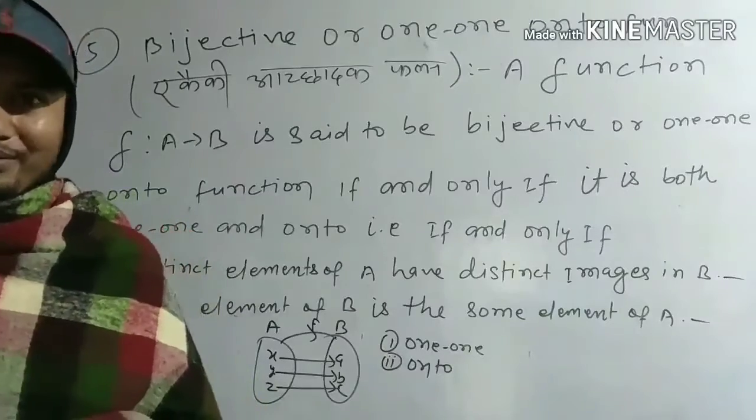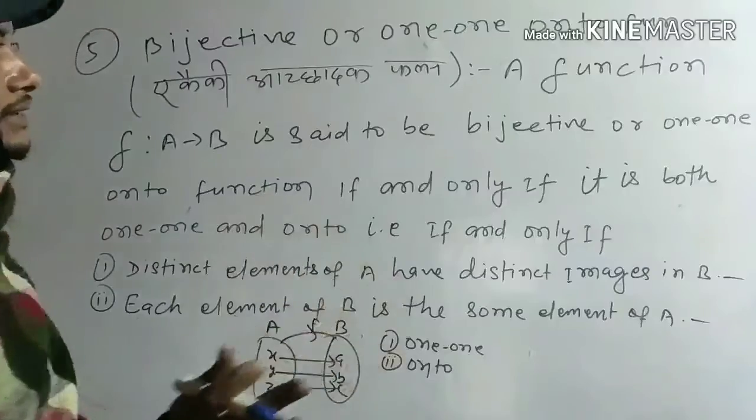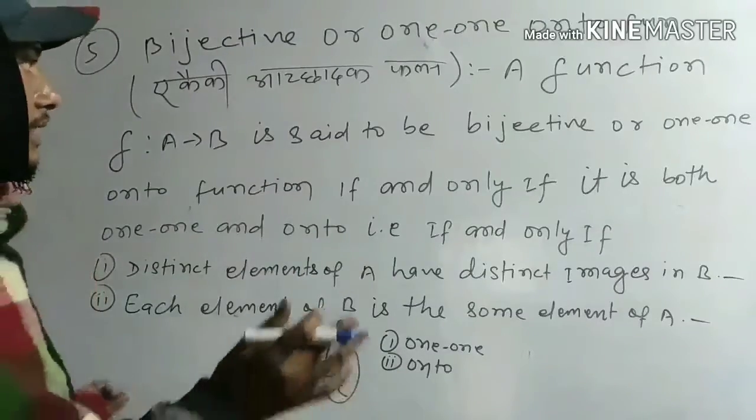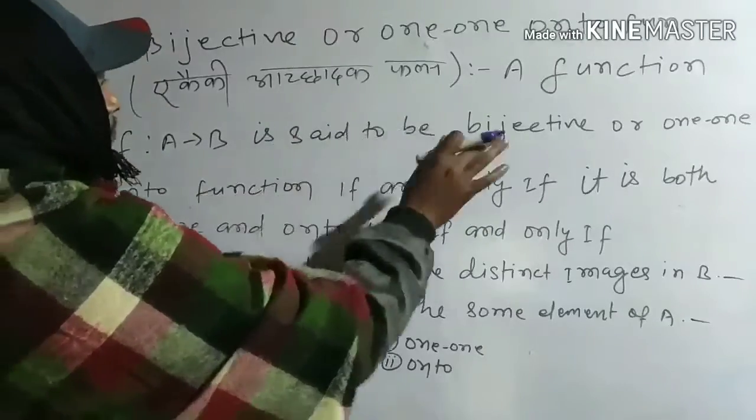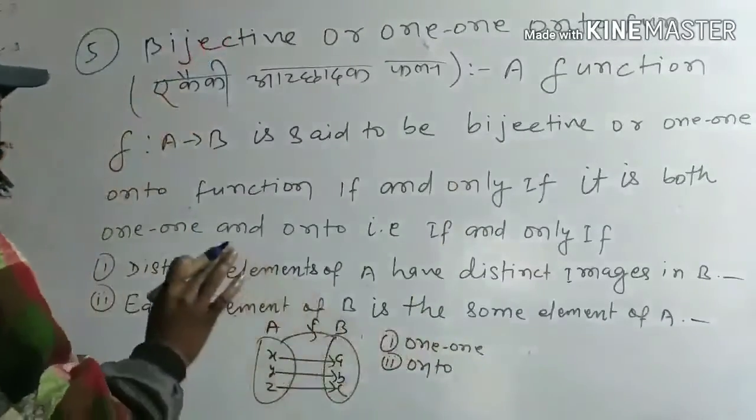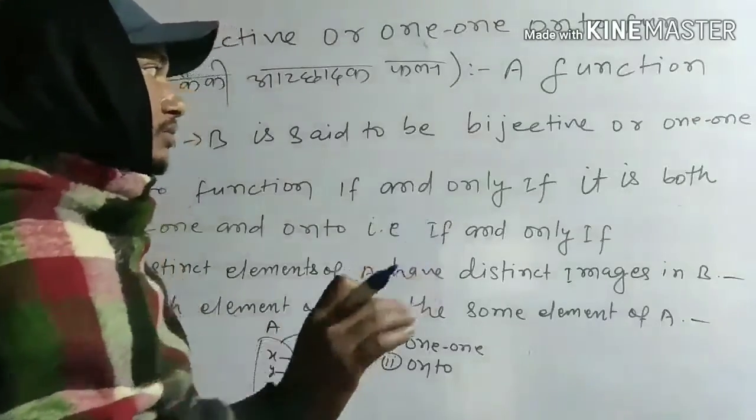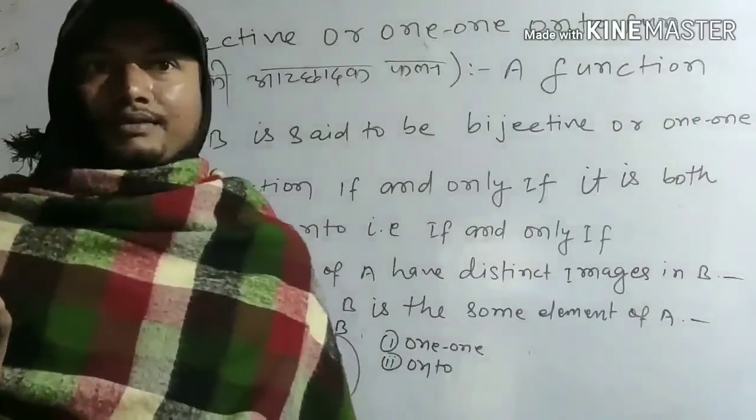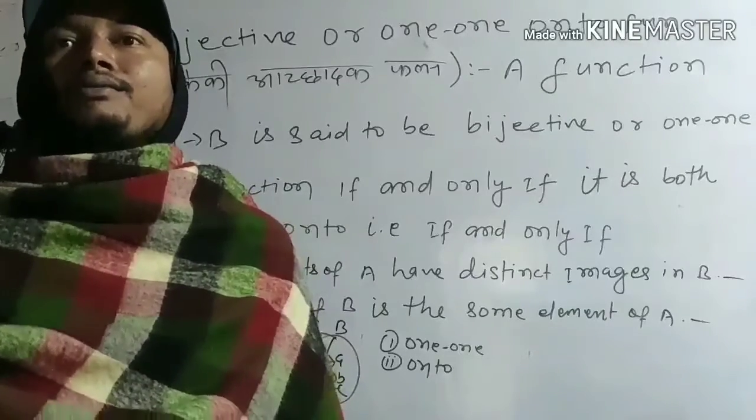If F is one-one-onto, that is what we call bijective - one-one-onto. When we apply this function, then F is said to be bijective, one-one-onto function.